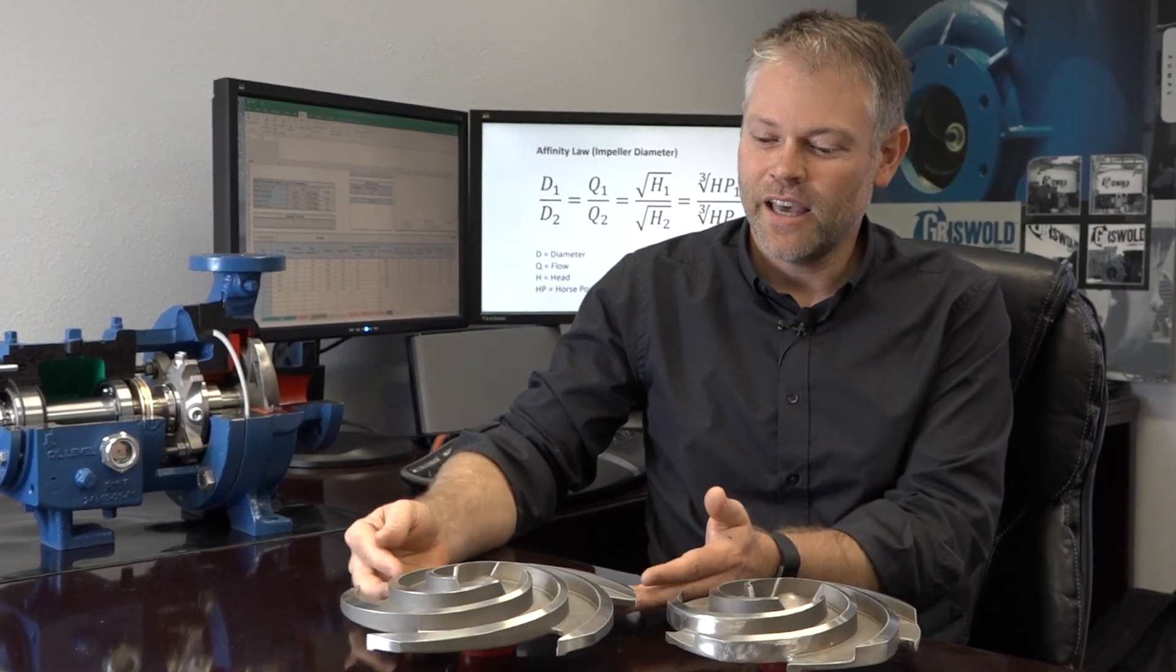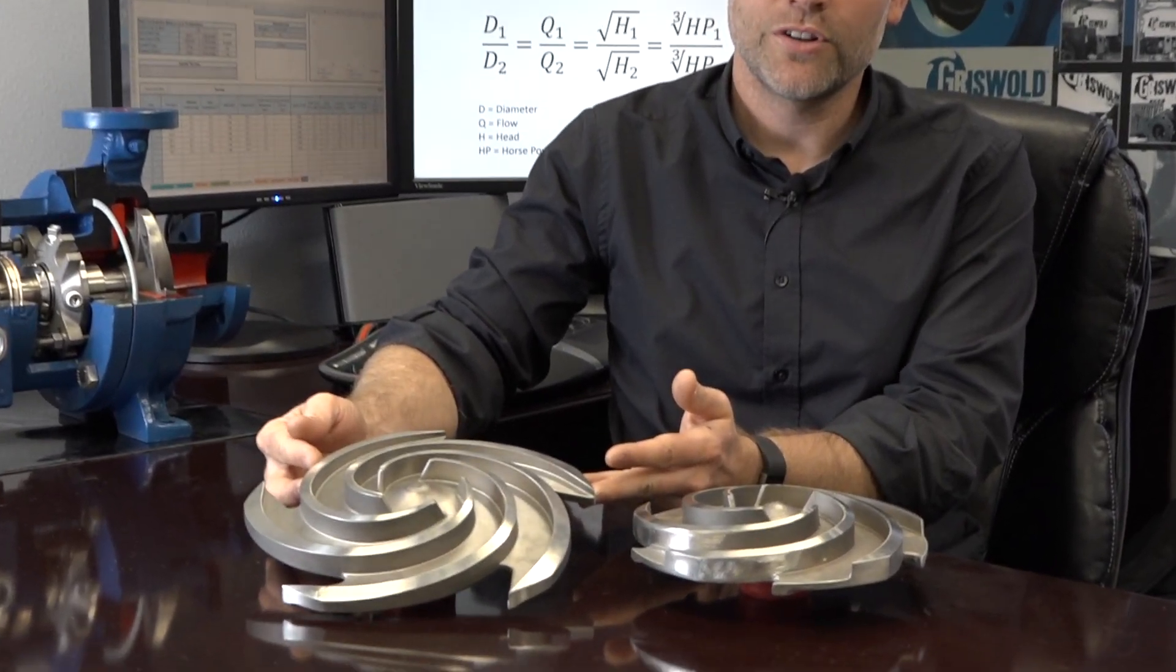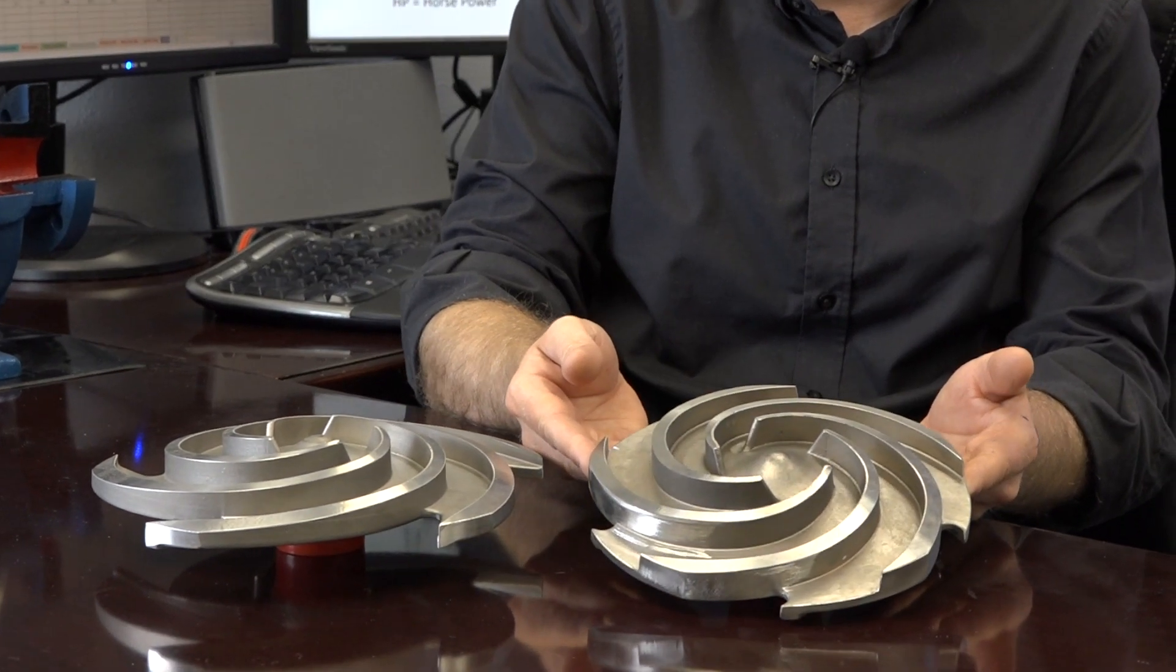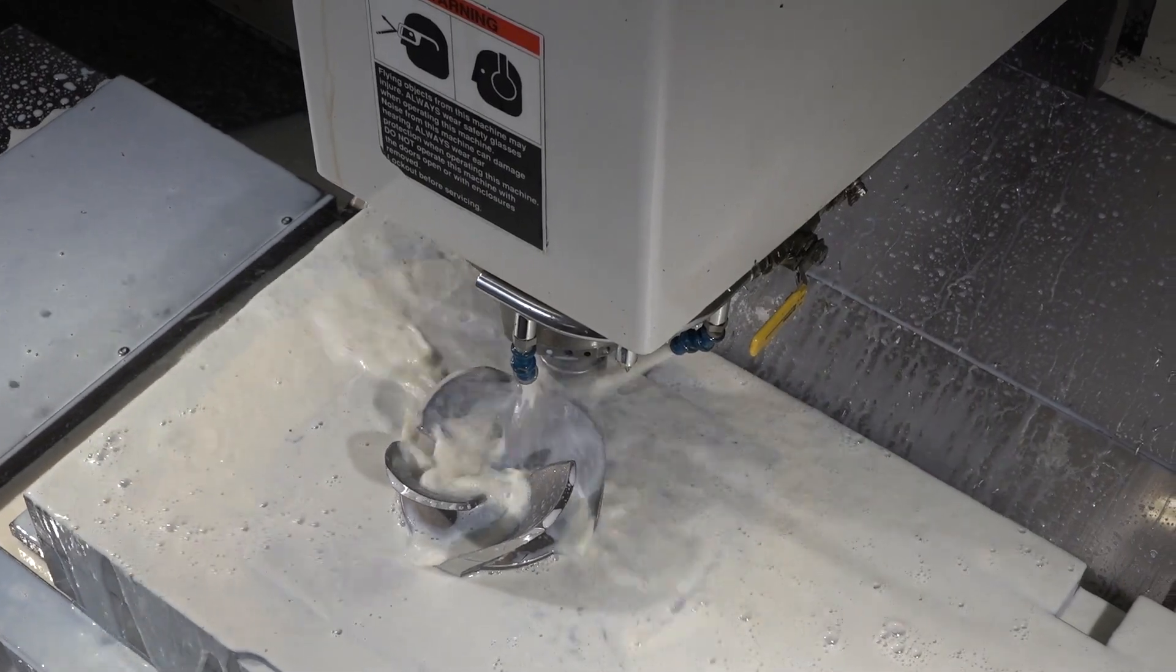Here you can see an impeller that is full trim versus one that we have removed some material to trim. This is going to affect the pump's performance by lowering the flow, lowering the head pressure, and also reducing the power that the pump is going to require. This can be predicted by using the pump affinity law. Let's take a look.